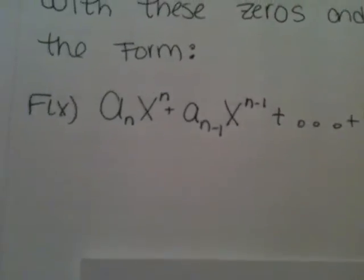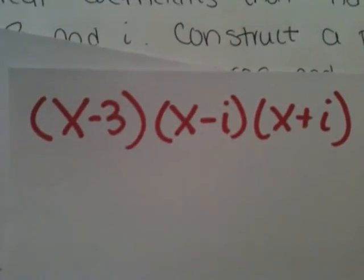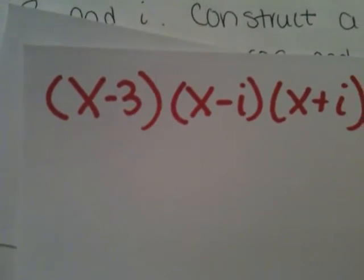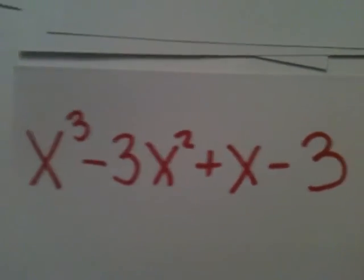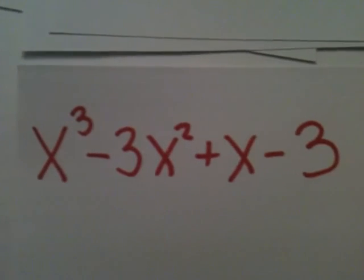So you start out with the zeros. You know it's negative i. Write them out in factored form. And basically just use the FOIL method to get your polynomial. And that's all there is.